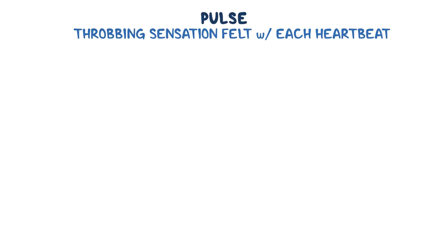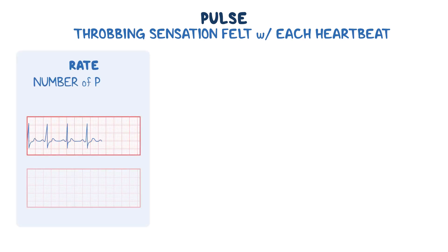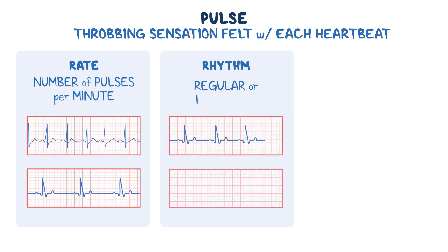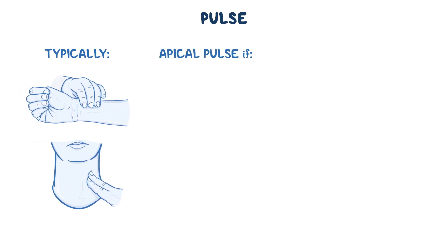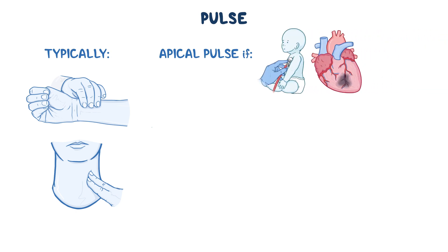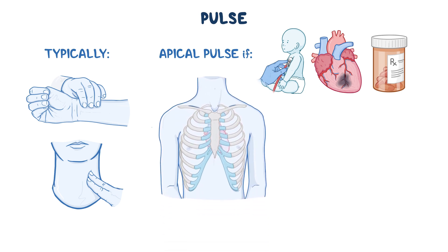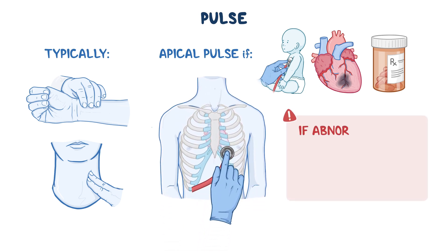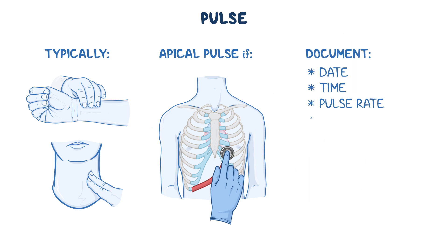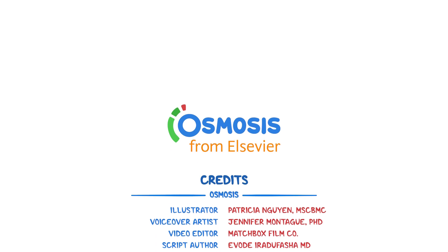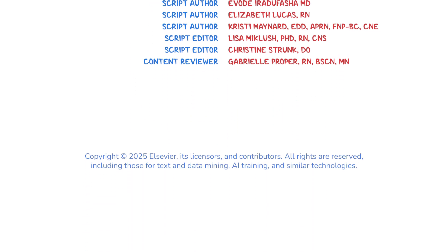As a quick recap: the pulse represents the throbbing sensation felt with each heartbeat over arteries near the surface of the body. It's characterized by pulse rate (number of pulses per minute), pulse rhythm (regular or irregular), and pulse amplitude (strength or fullness). It's typically obtained via the radial or carotid artery. An apical pulse is used if those sites are unavailable, if the patient is an infant, has a heart condition, or takes medication affecting the heart. If you find an abnormal pulse, recount for a full 60 seconds, check the patient for symptoms, and document all findings.